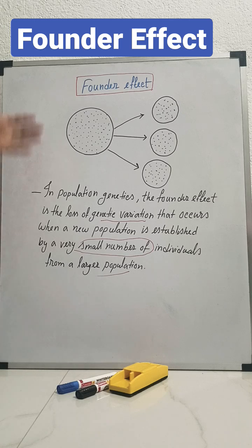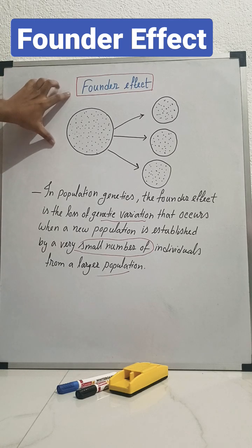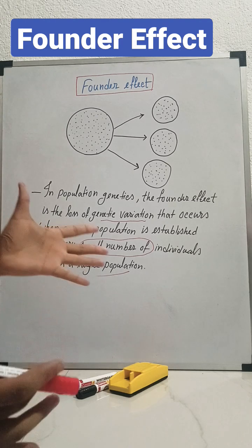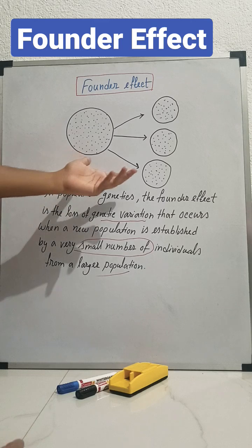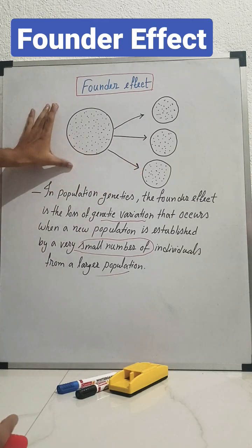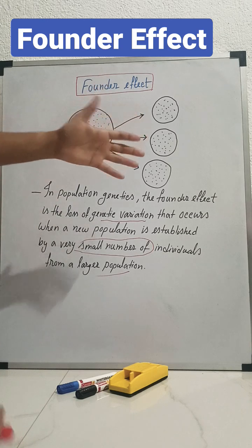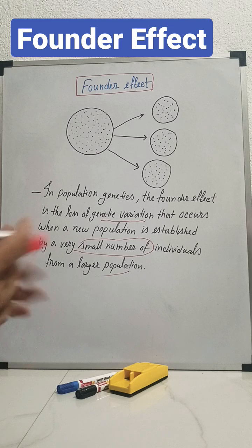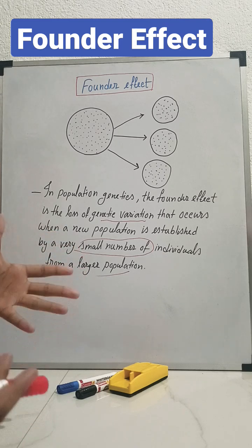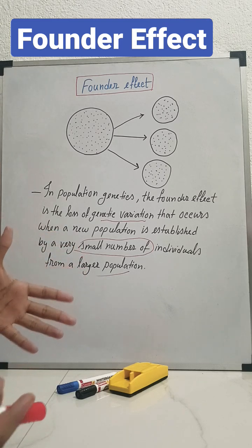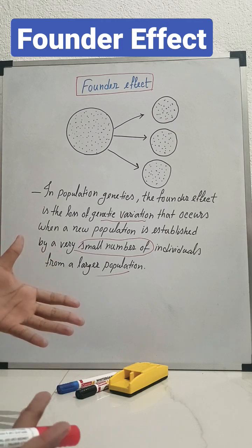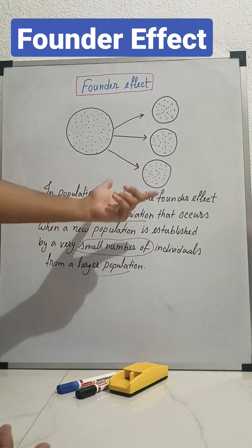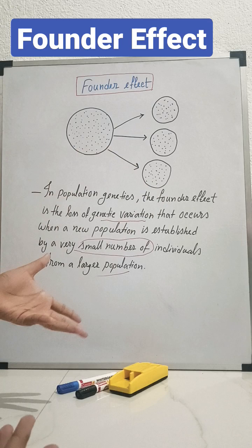Let's learn why this is called founder effect. Simply think that some individuals get separated from their main population, get isolated from their main population, and maybe they go to a new geographical region and there they establish their population newly. Founder means a person who starts an organization, so here they are the founder of their population.